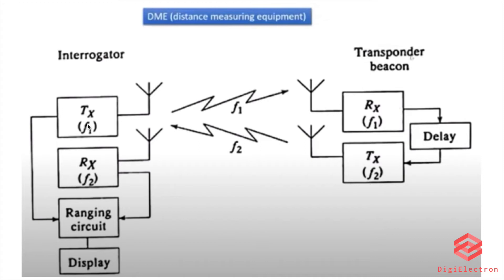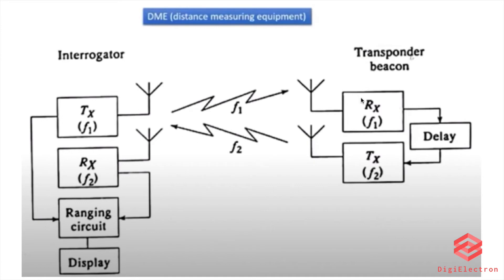We are going to transmit the F1 frequency. Once we transmit the F1 frequency, the transponder will receive the F1 frequency and activate a reply. If we activate the signal, there will be a delay in the transmitter section.